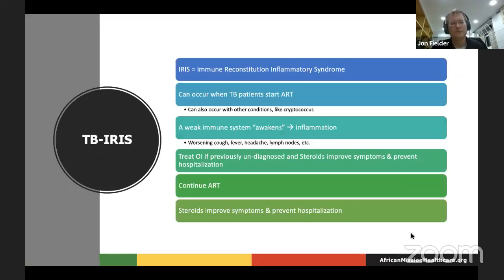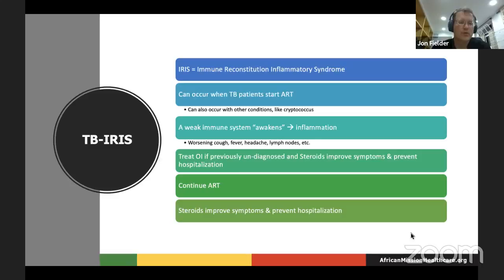I mentioned Immune Reconstitution Inflammatory Syndrome before. There's a doctor who worked in Western Kenya for many years who calls it the 'awakening syndrome' — think of the body waking up from its immunological slumber as it goes on antiretroviral therapy. As the immune system becomes a lot stronger, it attacks whether it's cryptococcal meningitis, Kaposi's sarcoma, or TB. This is often a case where TB was there but not recognized when the patient started antiretroviral therapy, and then symptoms and signs were elicited by the now-strong immune system — we call that 'unmasking IRIS.' Sometimes that's how we diagnose TB.